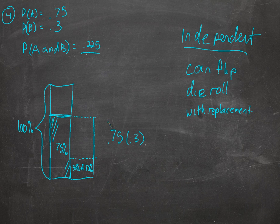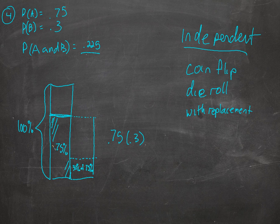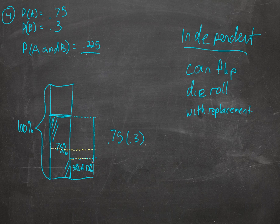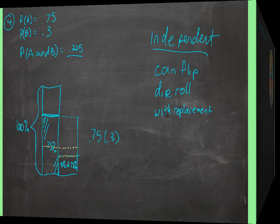If we go the other way — try B and then A — it'll still be the same amount likely. We'll try only 30% of the time, and then 75% of that 30%. So whether we do A and then B or B and then A, if they're independent, it doesn't matter.